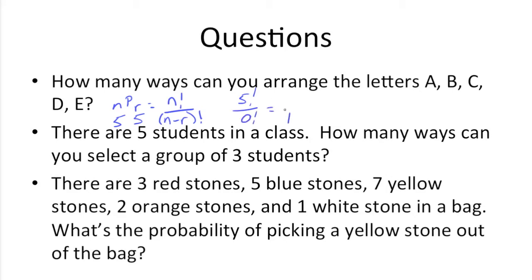0 factorial is always equal to 1, and we're left with 5 factorial on top, which is the same as 5 times 4 times 3 times 2 times 1, which equals 120.